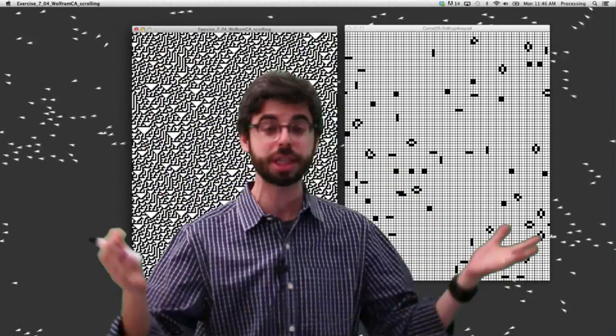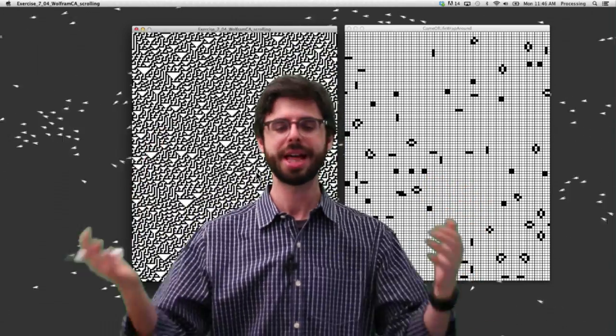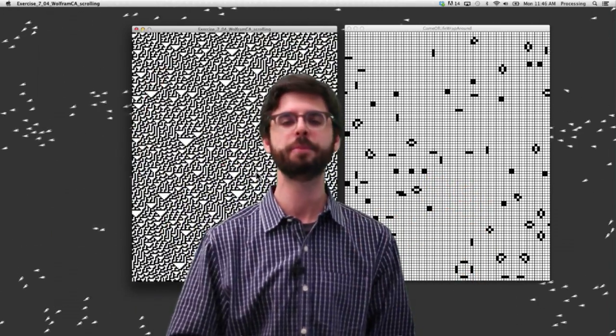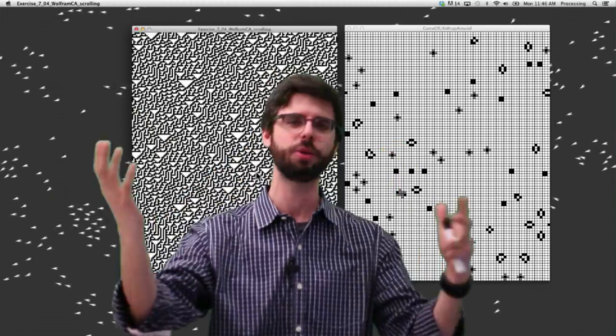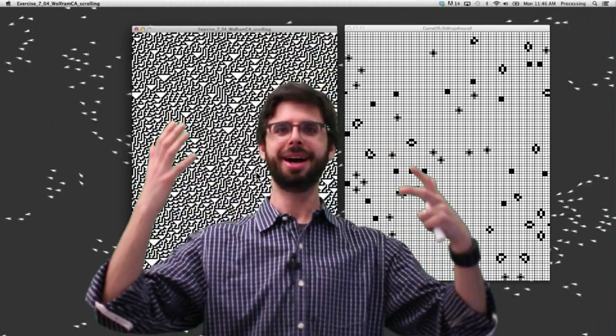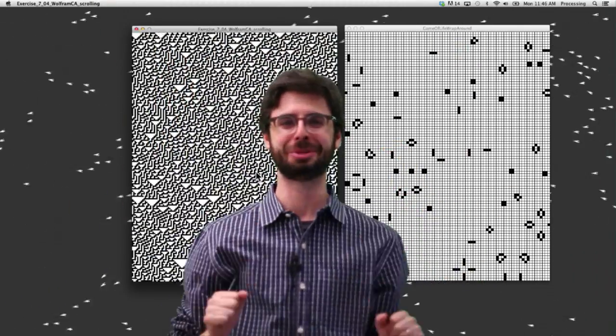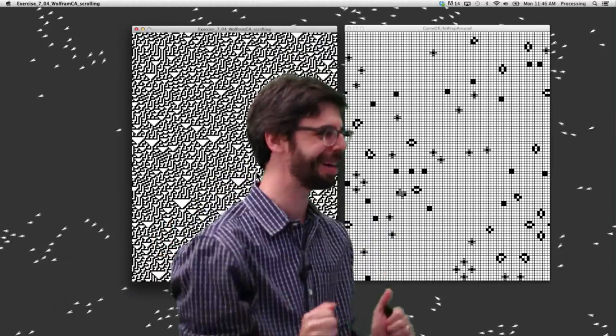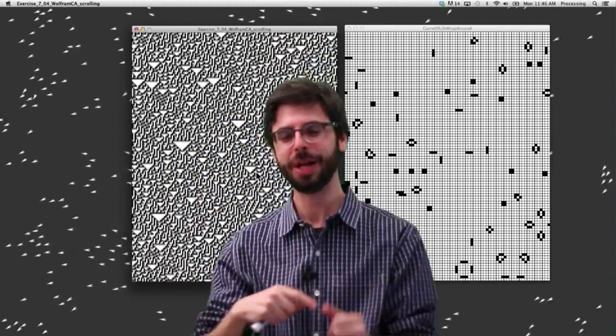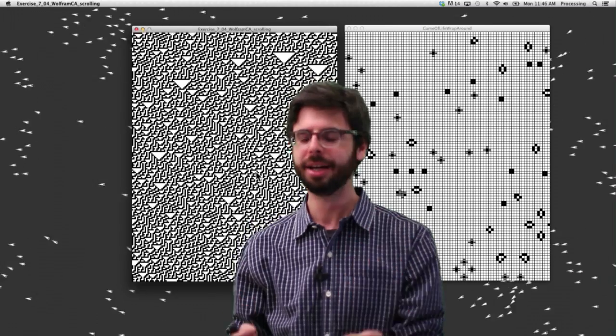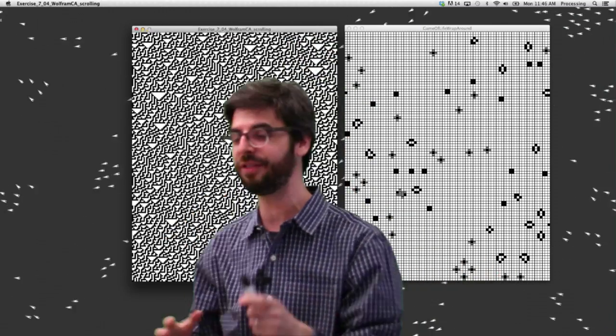So hopefully this video is going to kind of introduce the concepts behind these two systems, and the next couple videos we'll walk through the code for them, and the last video we'll kind of talk about other possibilities in this realm. Okay, do we feel good about that? I feel good about that. Yes. So let's talk about, let's define, let's just say CA, let's define a CA. Okay, let's define a cellular automaton.